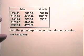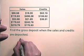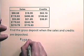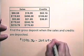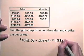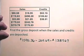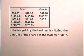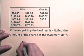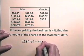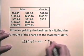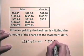Find the gross deposit when the sales and credits are deposited. The sales total $1,595.36. We will subtract the credits, which are $207.69, to find the gross deposit of $1,387.67. If the fee paid by the business is 4%, find the amount of the charge at the statement date. The gross deposit is $1,387.67, and there is a 4% fee, which gives us, rounded to the nearest cent, $55.51.